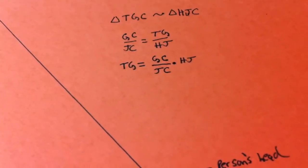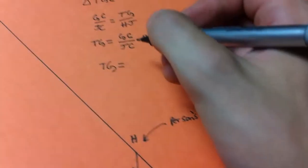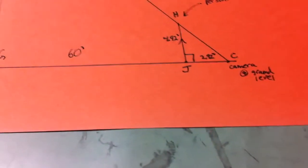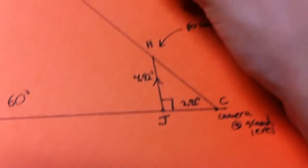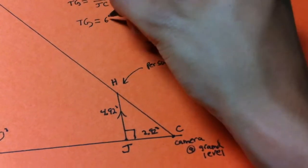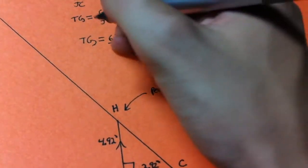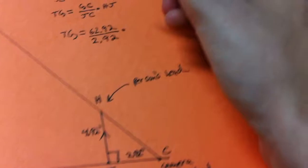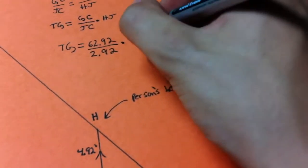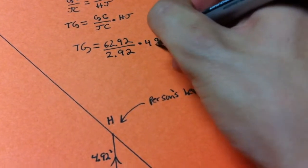Therefore TG is going to equal the ground to the camera, which is those two values added together, so about 62.92 divided by Jelly Puddle to the camera, which is 2.92, and then multiplied by the height of Jelly Puddle, which was about 4.92 and that is equal to approximately 106 feet.